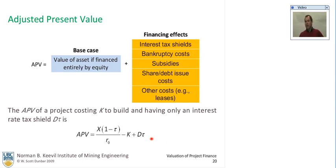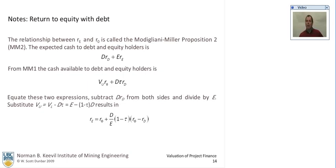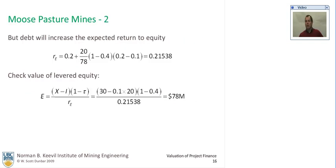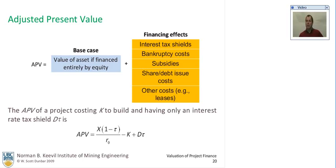One way of getting R0: if you knew what R_E was from the capital asset pricing model or observations, and you know the debt-over-equity ratio of a particular company or operation, and you know what their interest rate on their loans is, you can unravel all this to get an R0 — but it is an estimate. R0 and R_D are the only fundamental rates; the rest are all derivations or derivatives of the others.